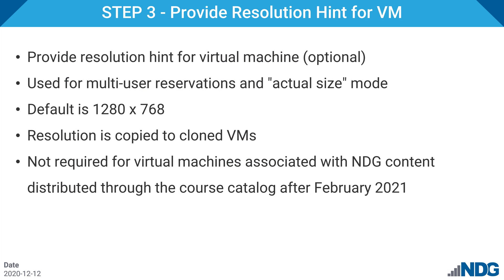Step three: you can set a resolution hint on the VM, which will be used for multi-user reservations and actual size mode. If you do not provide a hint, VE will default to 1280 by 768. If you clone a virtual machine or a pod, the resolution hint will be copied to cloned virtual machines, so make sure your master VMs have a resolution hint. As mentioned in step two, set this up in a master pod virtual machine before cloning out. If this is not logistically possible, you can continue to use VNC with ESXi version 6. The requirement to use MKS applies to ESXi 7 and later. This step is also not required for master virtual machines if you're using pods associated with NDG content distributed through the course catalog after February of 2021.